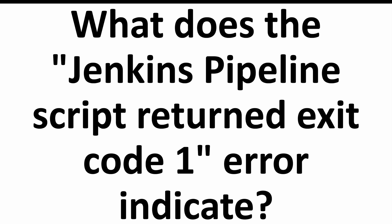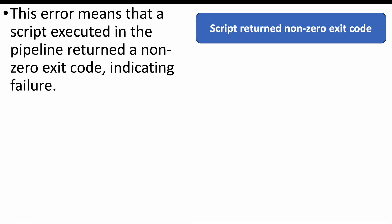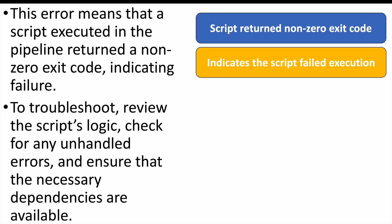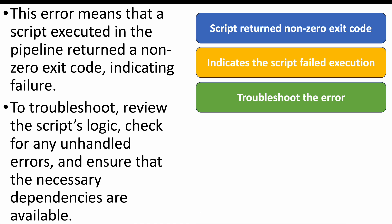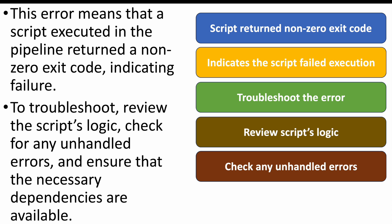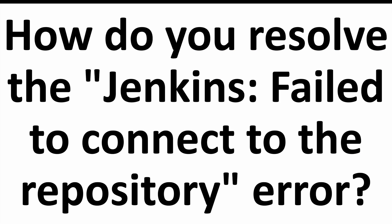The next question: what does the 'Jenkins pipeline script returned exit code 1' error indicate? This error indicates the script returned a non-zero exit code, meaning the script failed execution. To troubleshoot, check the logic of the script, look for unhandled errors, and ensure all required dependencies are available. Review and fix the issues, then rerun the script.